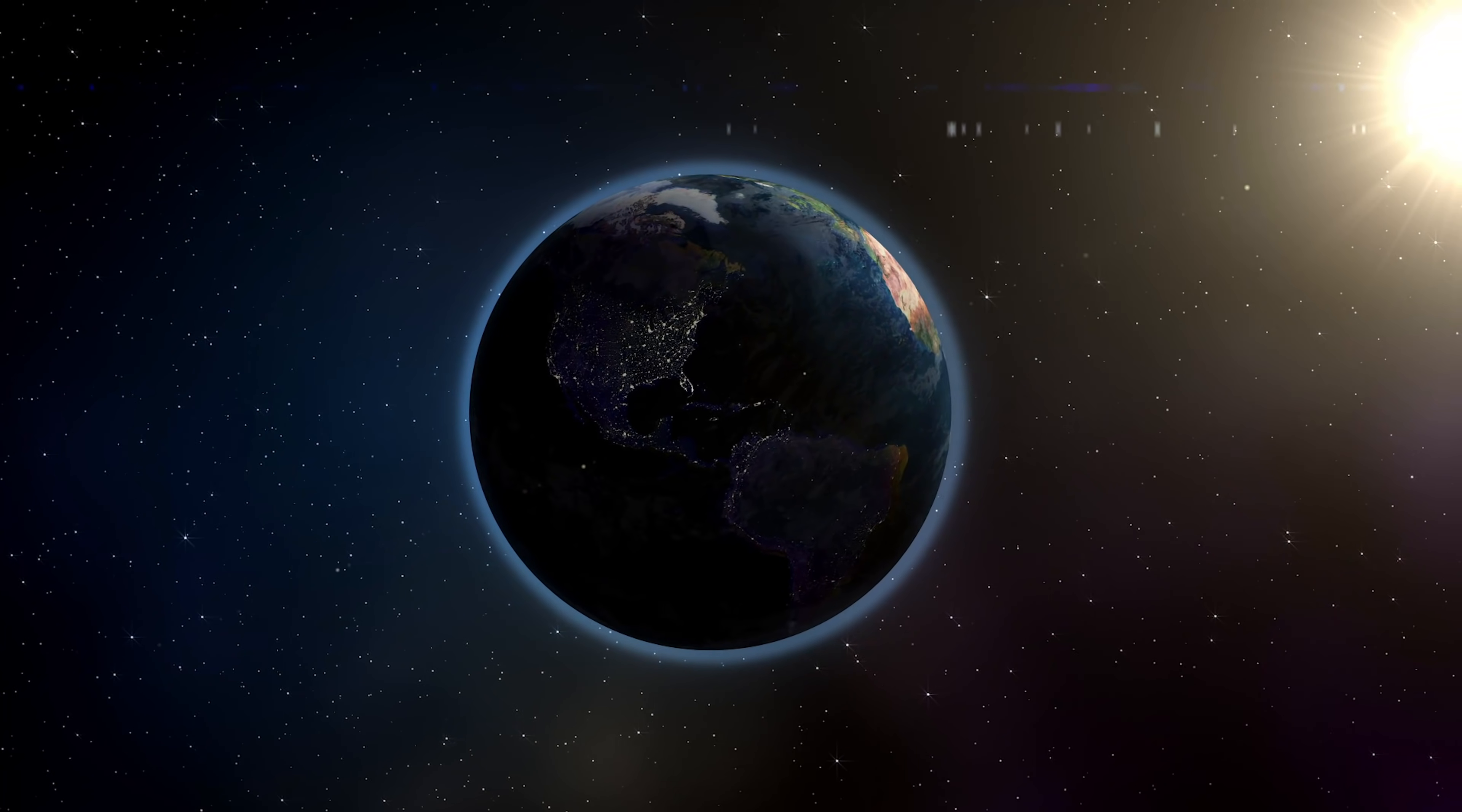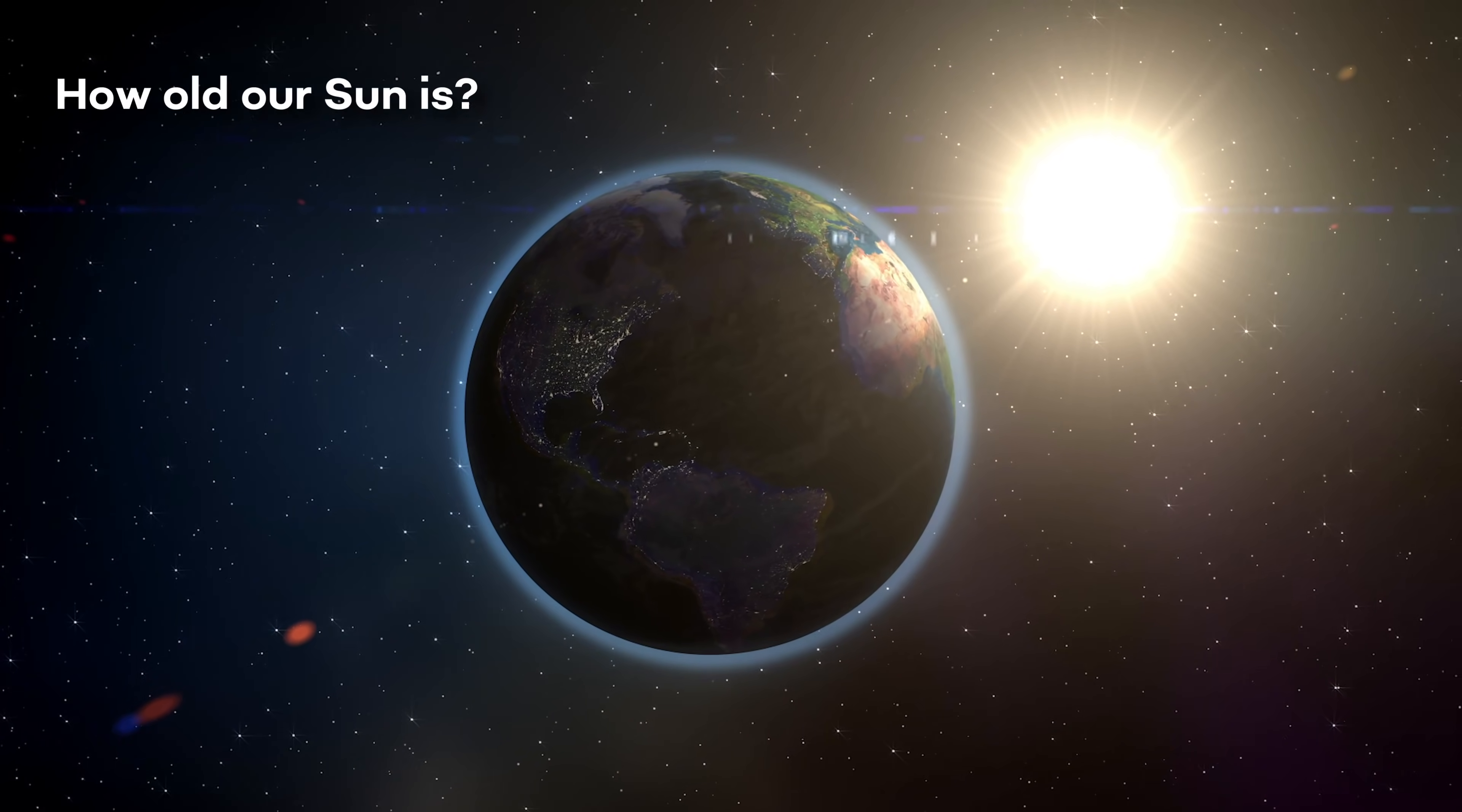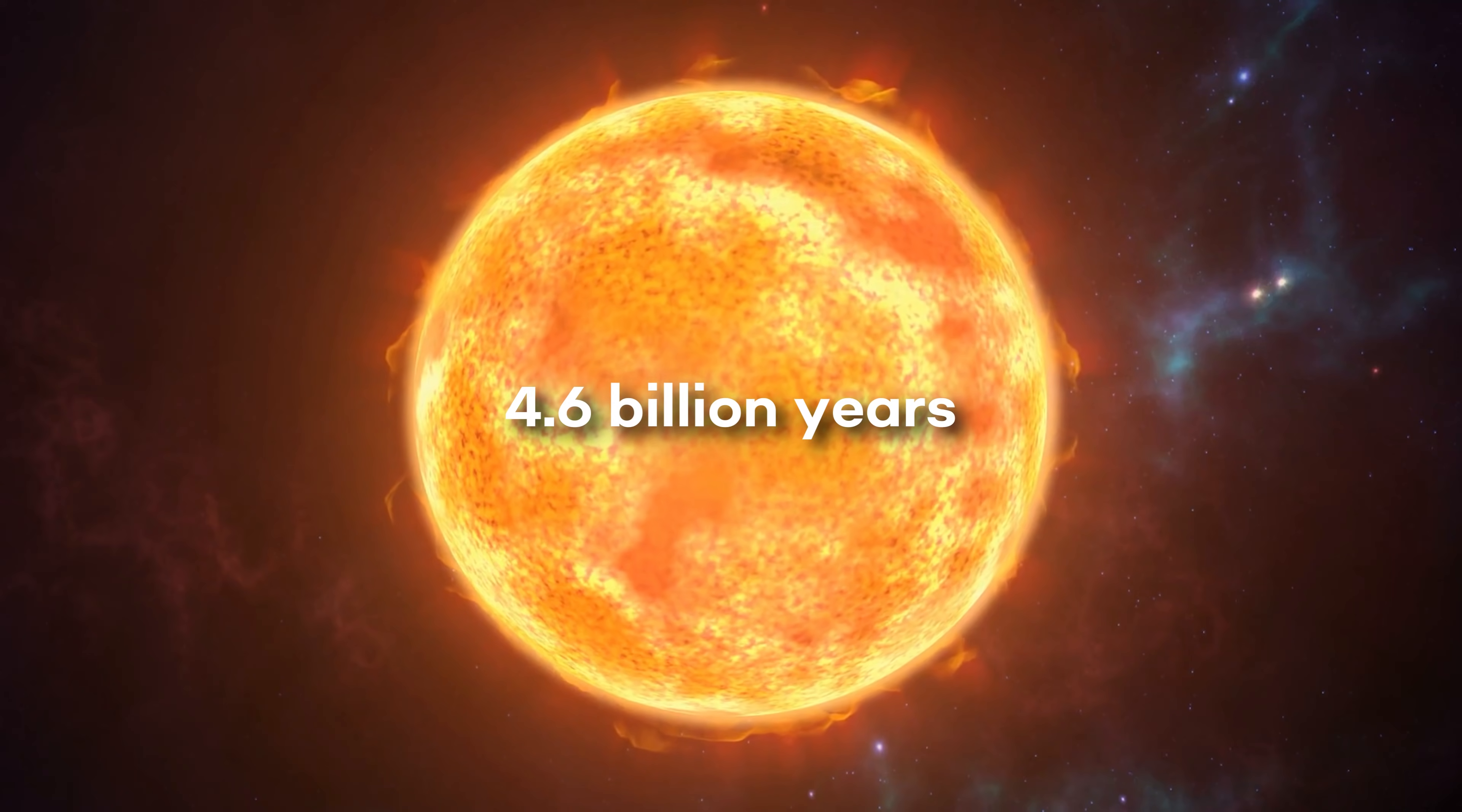For example, in order to have Earth, we first need the Sun. So we can ask ourselves how old our Sun is. And it turns out that it's a little bit older than the Earth. Its age is about 4.6 billion years.